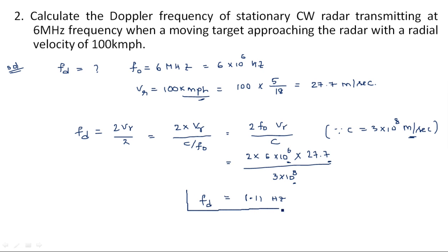The Doppler frequency shift is a very small value. Generally it does not exceed the kilohertz range — it is typically in the hertz to kilohertz range depending on the velocity of the object. These are the two problems commonly and frequently asked in main exams on CW radar. Thank you.